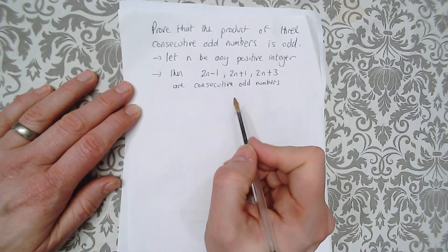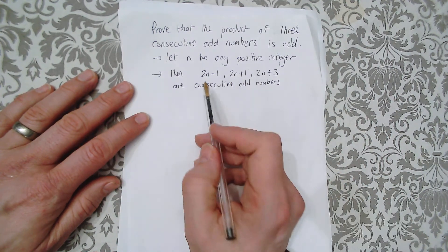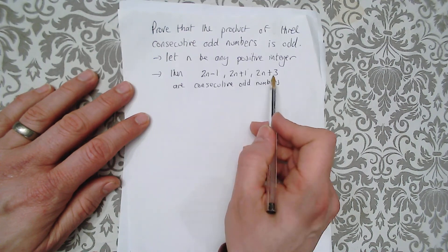Now the reasoning there is 2n is always an even number, 2 times an integer is an even number. If I take away one from an even number, I add one, I add three, you get odd numbers.